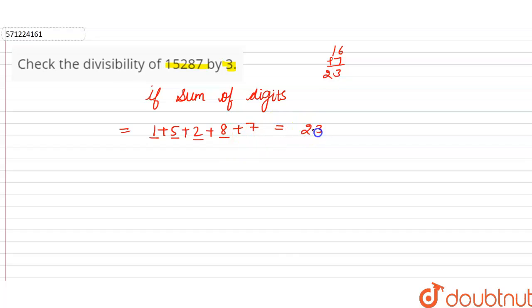Now we know 23 is not divisible by 3. So we can say the number 15287 is also not divisible by 3, and this is the required answer.